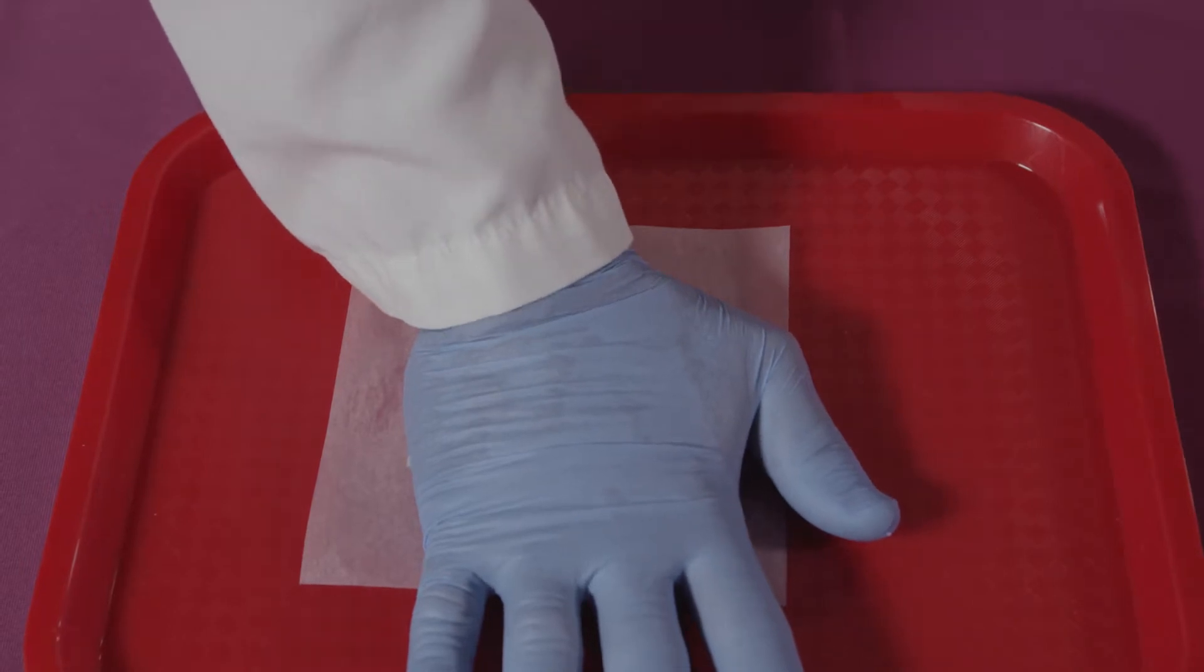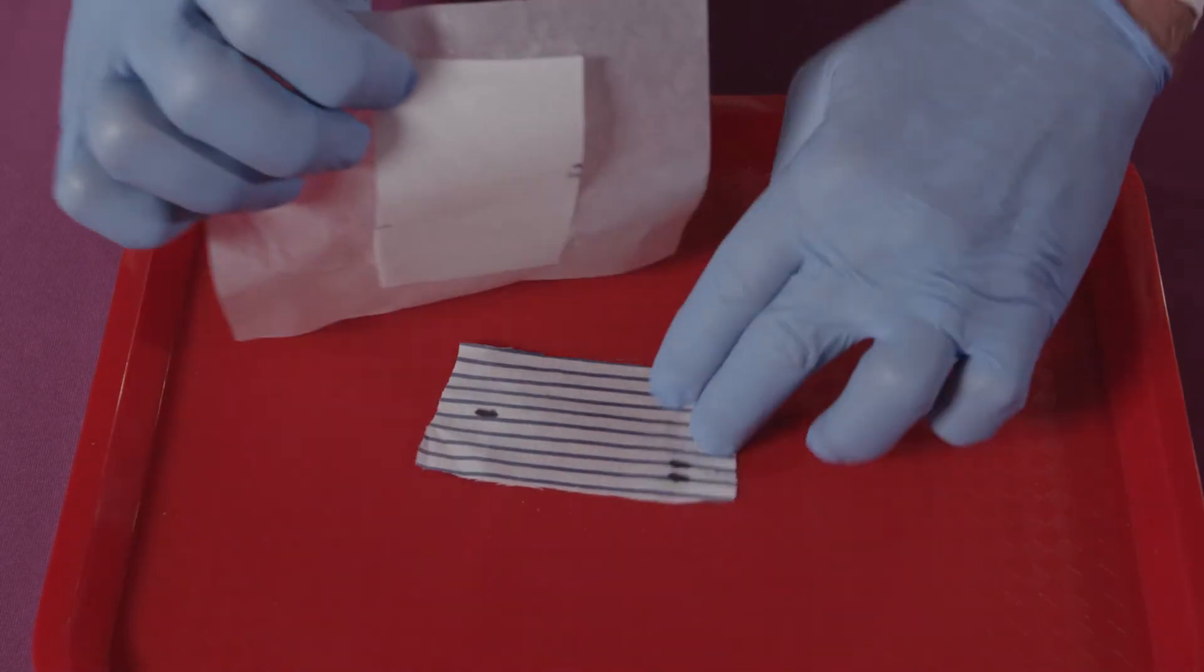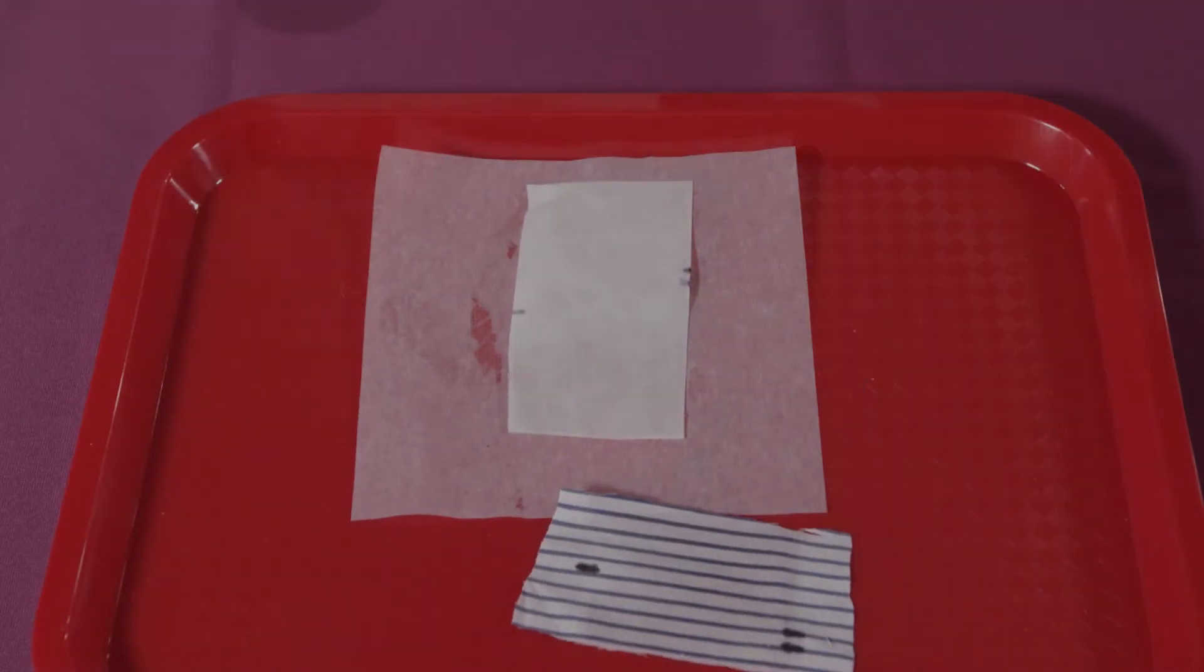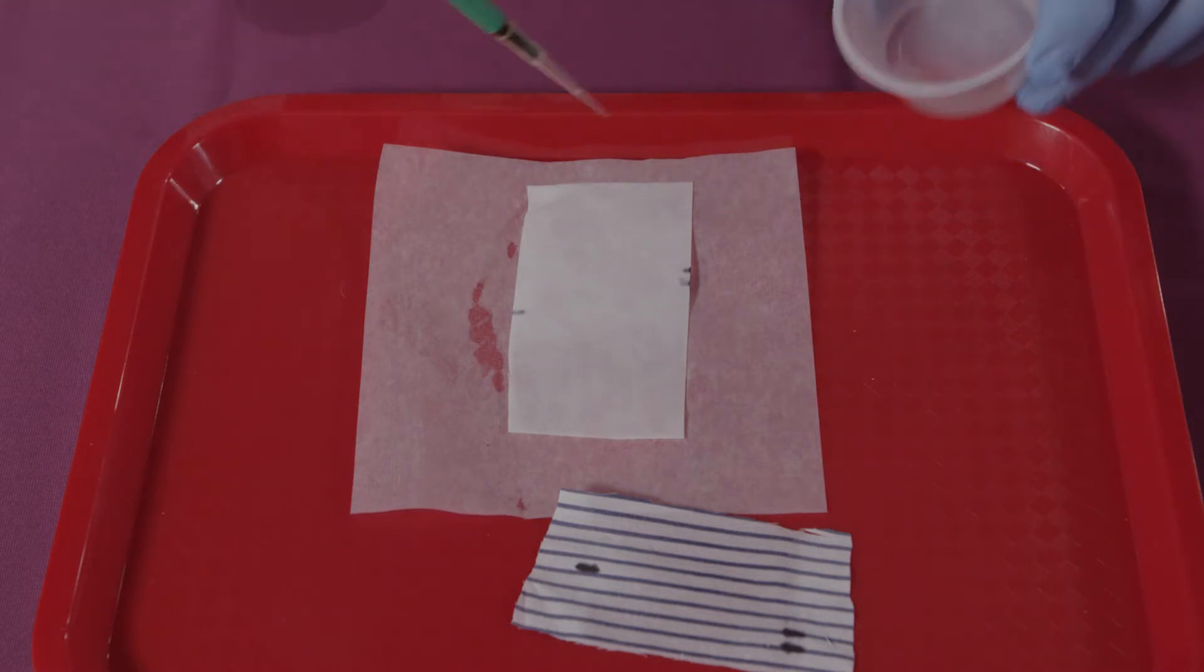The amylase paper is then removed from the article. 20 microliters of a known diluted saliva standard is applied to an area of the paper that was not in contact with the article.